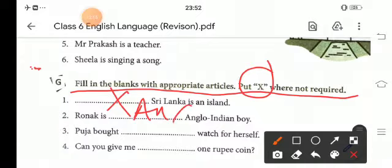We will start with A, Anglo. And then, Anglo. Vowel is there. Then, third one, Pooja bought a watch for herself. Fourth one, can you give me a one rupee coin?